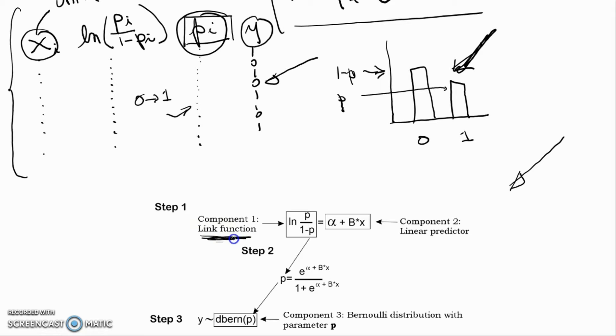There's a link function, there's a linear predictor, and there's a distribution, which in the case of this particular example, is going to be a Bernoulli. I should also change up here this y to a yi.